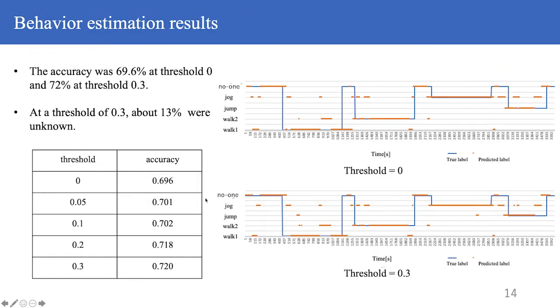The results are as follows. The table below shows the estimation results for each threshold. When the threshold is 0, the estimation accuracy is 69.6%, and when the threshold is 0.3, the accuracy is 72%. Although there were some places where Walk 1 was estimated as Walk 2, and there were many areas where the no behavior state was not estimated well. In addition, when the threshold was 0.3, the percentage of unknown results was about 13%.